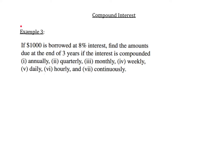Let's take a look at an example involving compound interest. If $1,000 is borrowed at 8% interest, find the amounts due at the end of three years if the interest is compounded, and then they give a bunch of options.